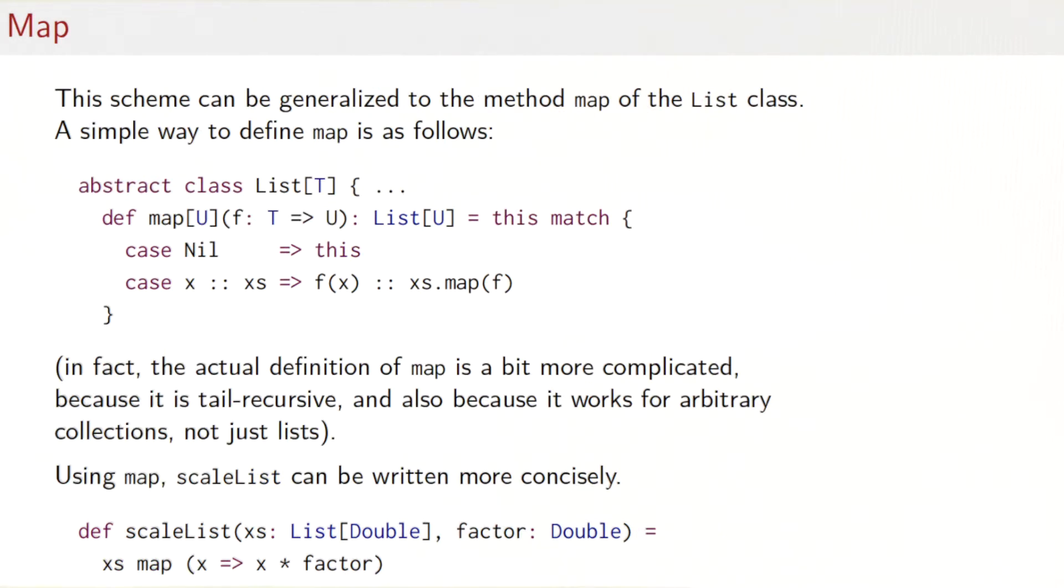That scheme can be generalized to a method map on the list class, which can apply an arbitrary operation to all elements of a list. Here's a simple way to define map on the abstract class list of T. We would say def map, and map takes a function from T to some other type U, and then it returns a list of U. The body of map is just like the body of scaleList, but now generalized. In the case of nil, we return the list unchanged. If the list is non-nil, then we apply the function f to the first element x, and we follow that with a recursive call of xs.map f.